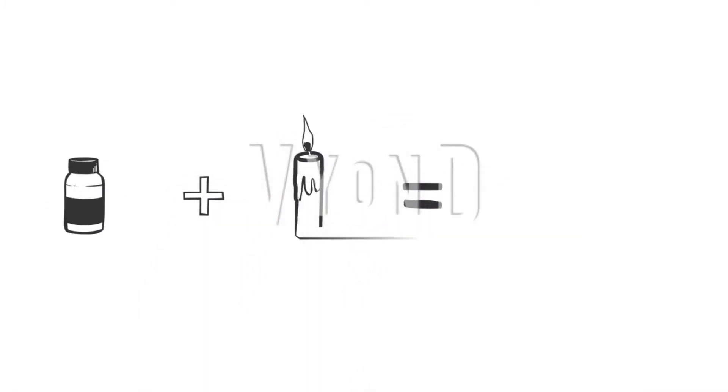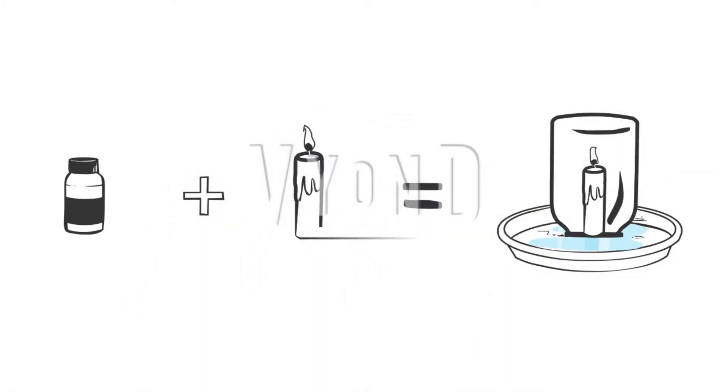So today, we are going to show you how air pressure can be illustrated by using food coloring, water, and a candle. But first, let's predict the result of this experiment.